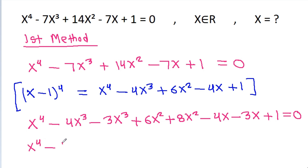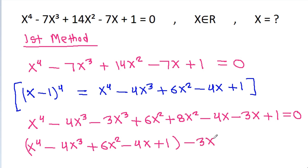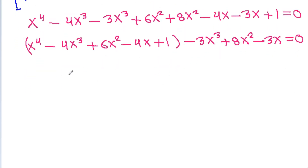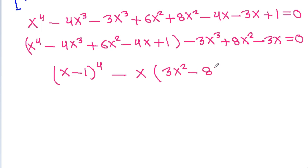It is x⁴ - 4x³ + 6x² - 4x + 1, and then -3x³ + 8x² - 3x. We can take x common and we get 3x² - 8x + 3 = 0.